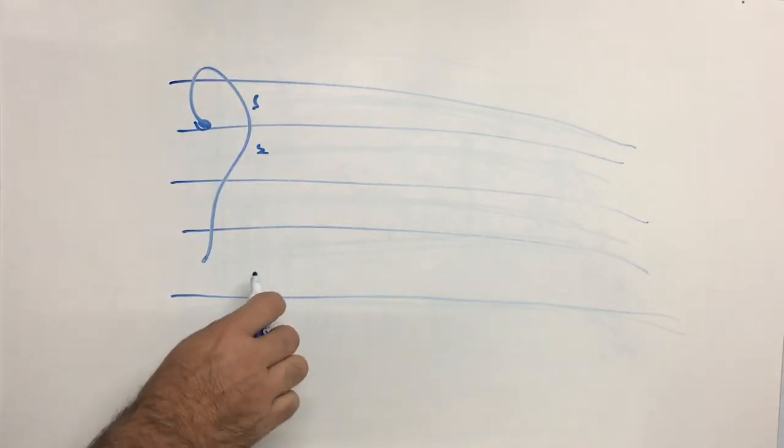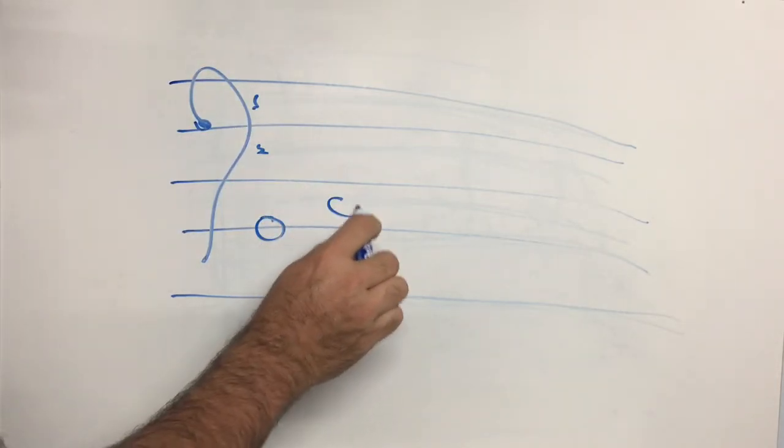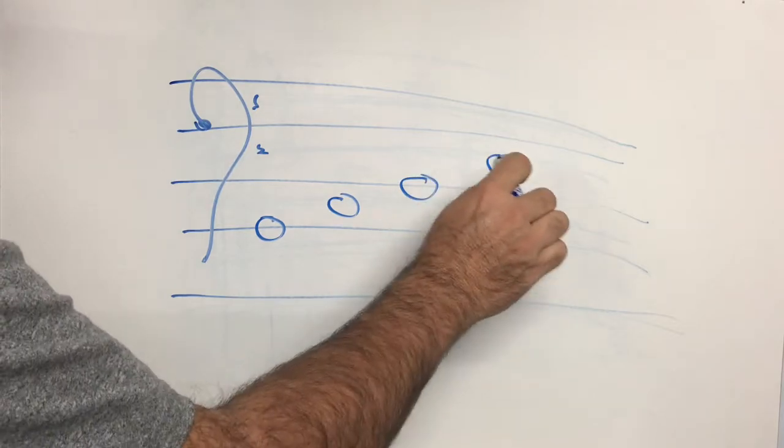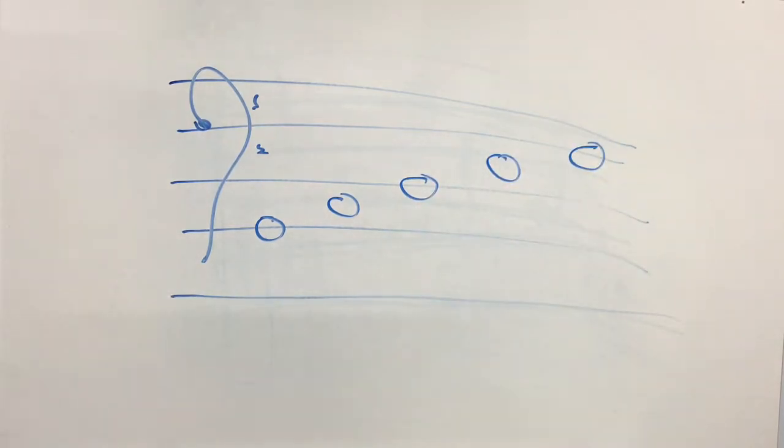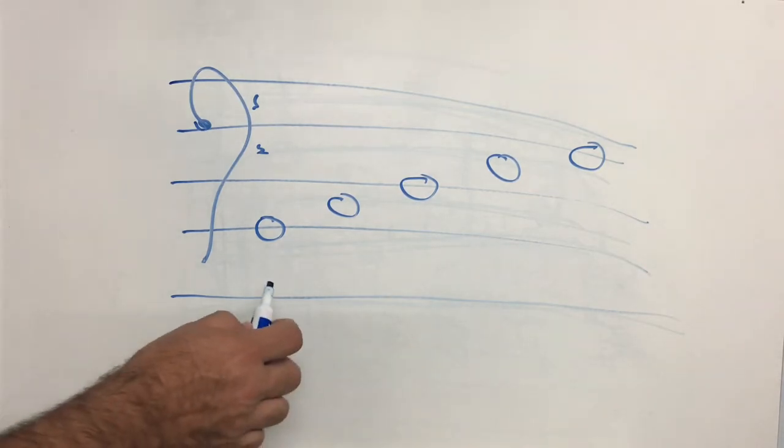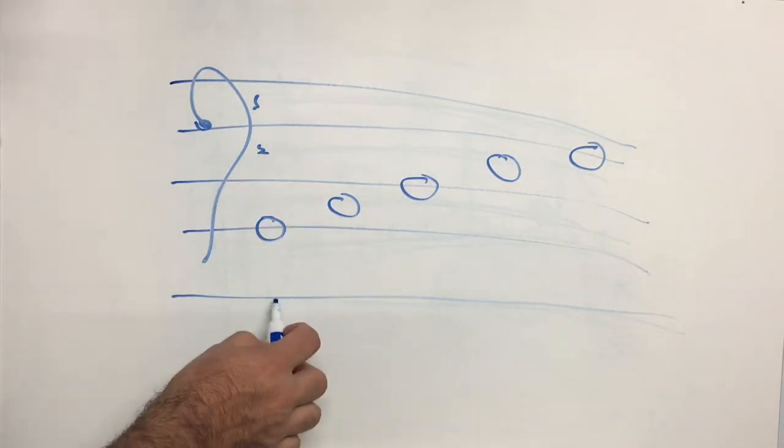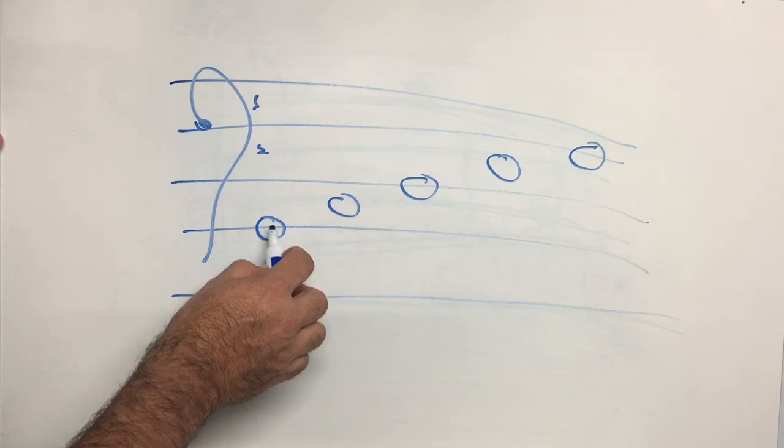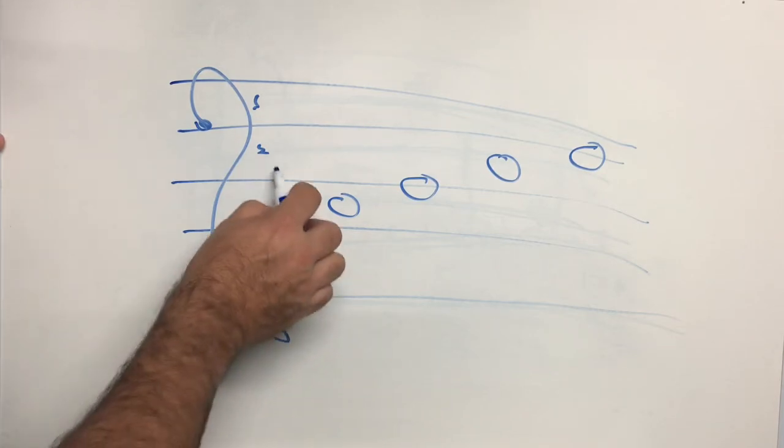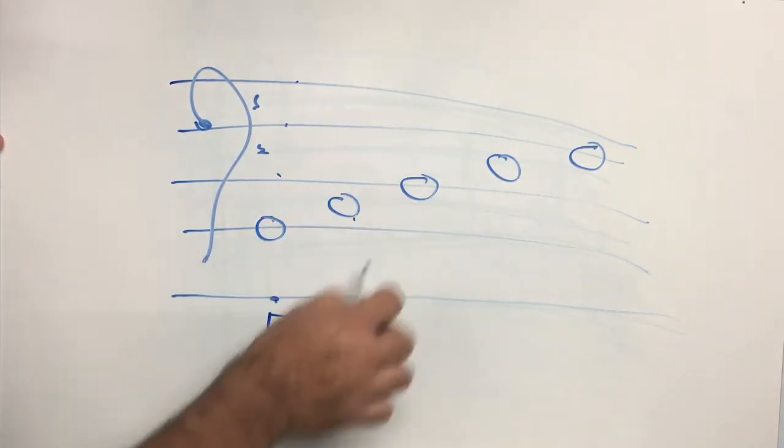Bass clef. There we go. See if we can work those out. Bottom line in bass clef is G. Good. B-Boys. B. Good boys deserve fruit always. Second space.